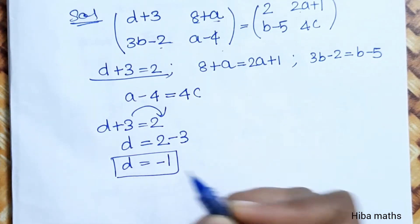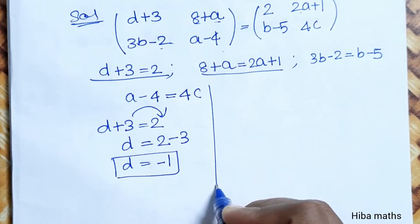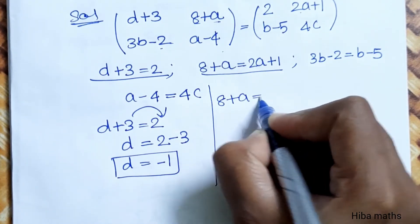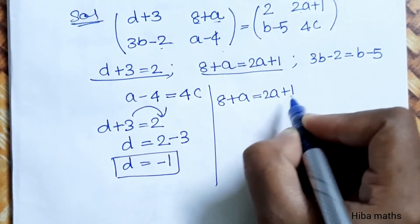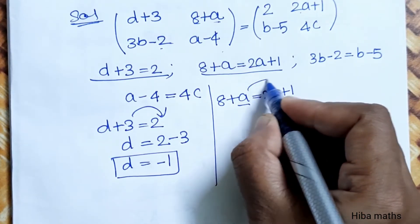First, D plus 3 equals 2. So D is equal to 2 minus 3. D is equal to minus 1.